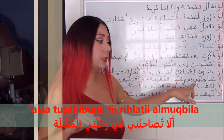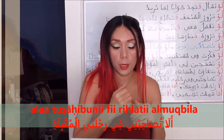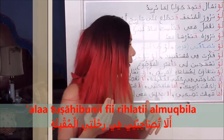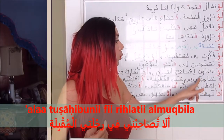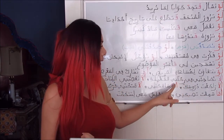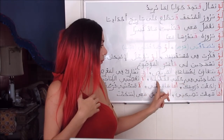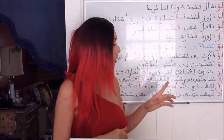ألا تصاحبني في رحلتي المقبلة — from the verb صاحبَ, 'to accompany'. Could you accompany me on my next trip? رحلتي refers to 'my trip'. المقبلة means 'next'. رحلة is a feminine singular noun, so its modifying adjective must match in number and gender — مقبلة, my next trip.